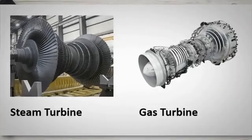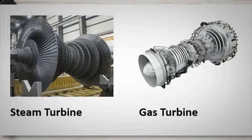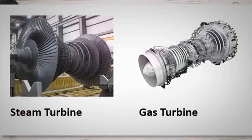Steam turbines, another type of rotating equipment, utilize high-pressure steam to generate mechanical energy. In the oil and gas industry, steam turbines are often used in conjunction with steam generators to produce power for refining processes. The steam, produced by burning fuel, expands through the turbine, causing the blades to rotate and drive a generator.